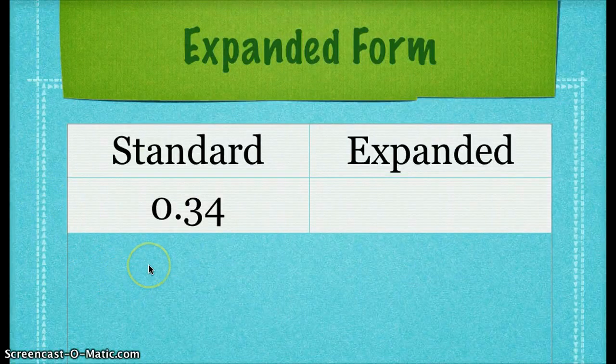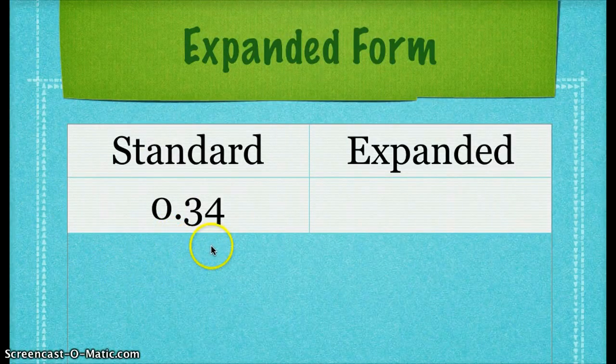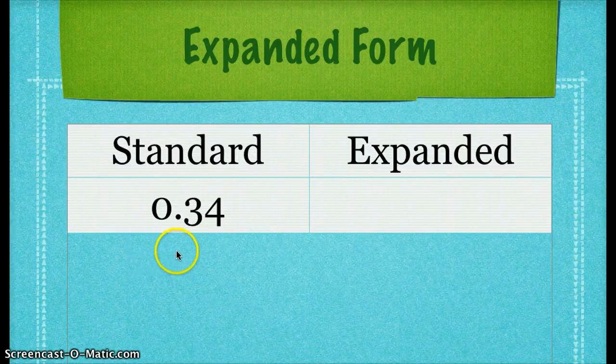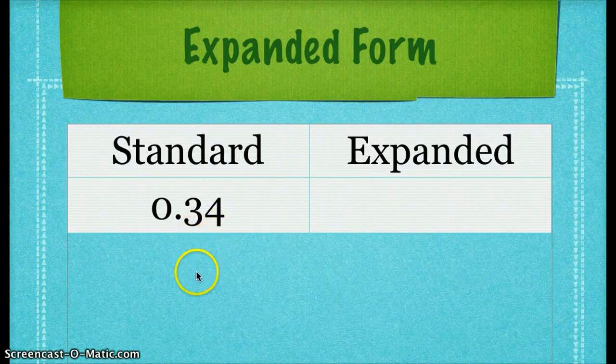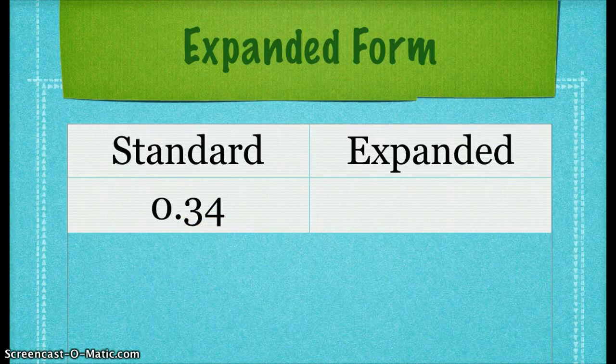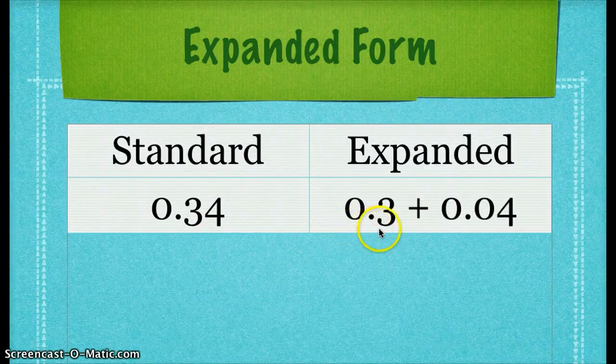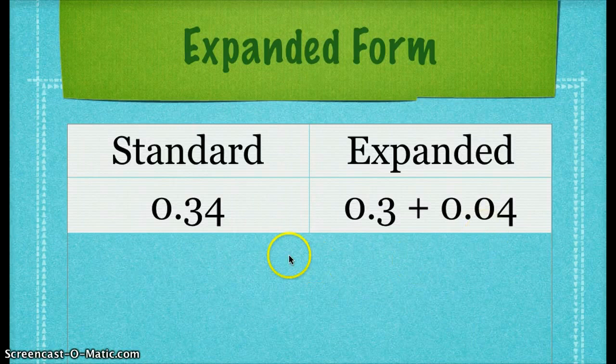If I give you the decimal in standard form, 0 and 34 hundredths, I can rewrite it in expanded form by breaking apart the 3 and the 4. I still need to respect their place values, though, so I write it as 3 tenths plus 4 hundredths. The 3 is in the tenths place here, and the 4 is in the hundredths place here.